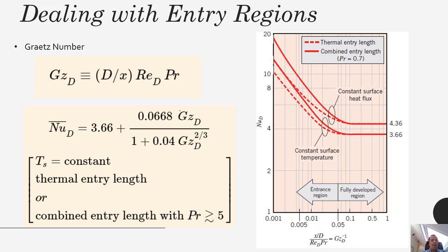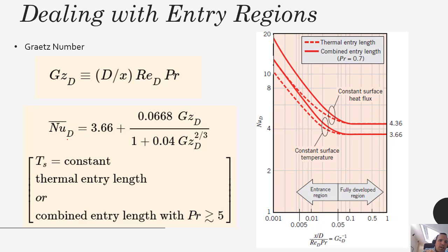Some correlations arise from the need to deal with the entry region. When flow first enters the pipe, boundary layers start to form, and until those boundary layers converge at the center of the channel you have a varying Nusselt number and heat transfer coefficient. Once flow becomes fully developed, those Nusselt numbers and local heat transfer coefficients level off. If it's important to account for entry length, one relevant parameter is the dimensionless Graetz number, defined as the pipe diameter over x, multiplied by the Reynolds number and Prandtl number — this number decreases the further down the pipe you go.